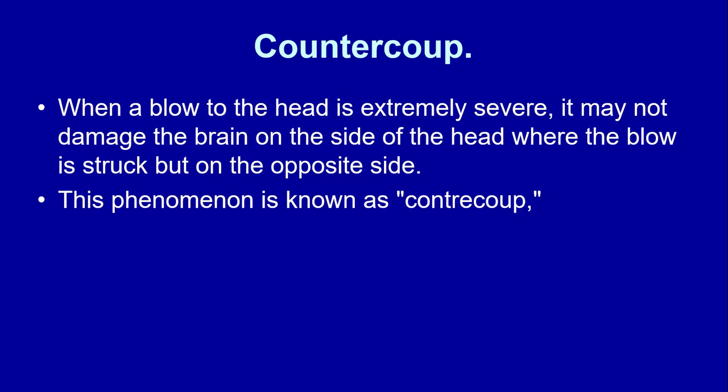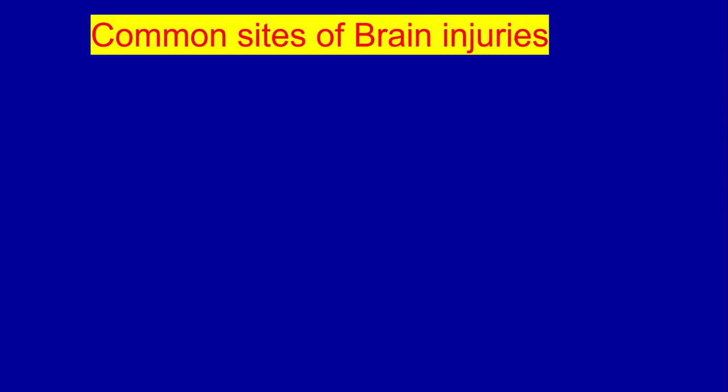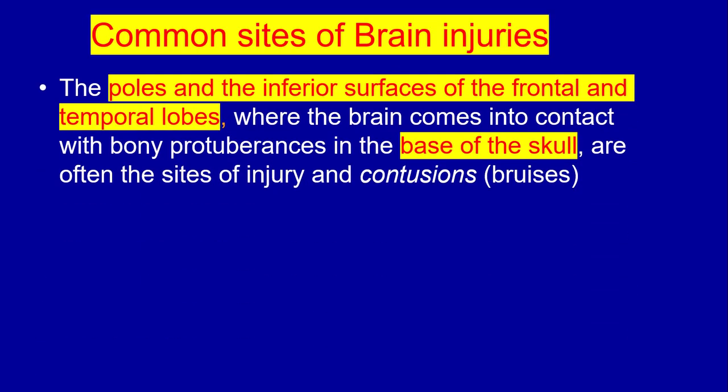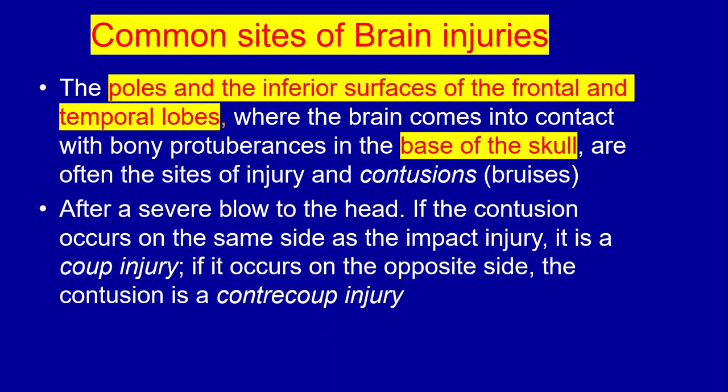This is called counter coup. When a blow to the head is extremely severe, it may not damage the brain on the side where the blow is struck, but on the opposite side — this phenomenon is known as counter coup. Common sites of brain injury are the poles and the inferior surfaces of the frontal and temporal lobes, where the brain comes in contact with bony protrusions in the base of the skull, and are often the site of contusions — also called bruises. If the contusion occurs on the same side as the impact injury, it is a coup injury; if on the opposite side, it is a counter coup injury.